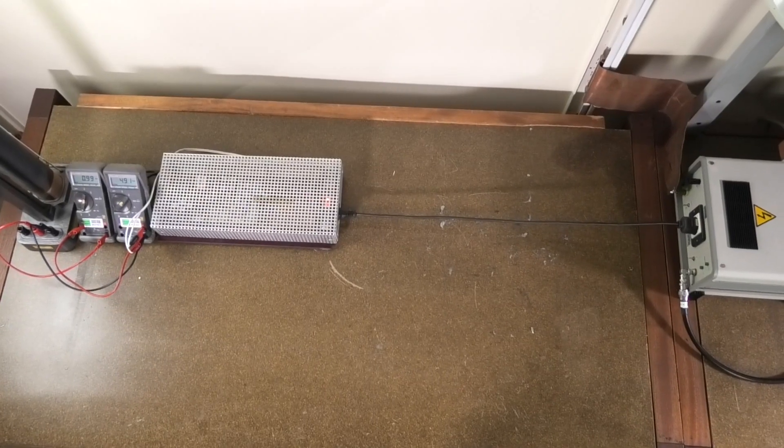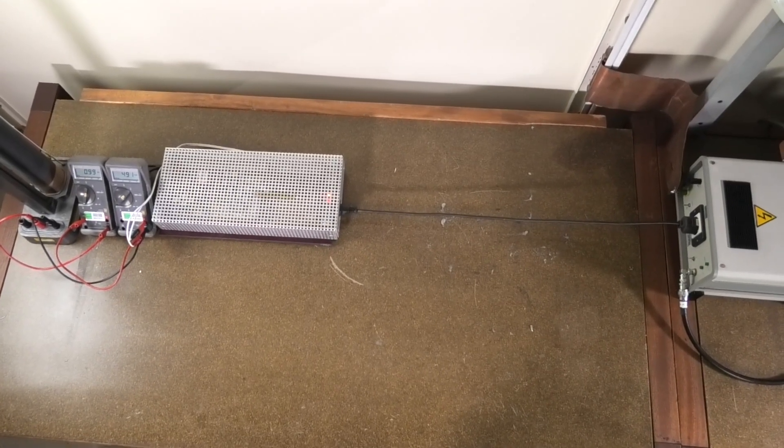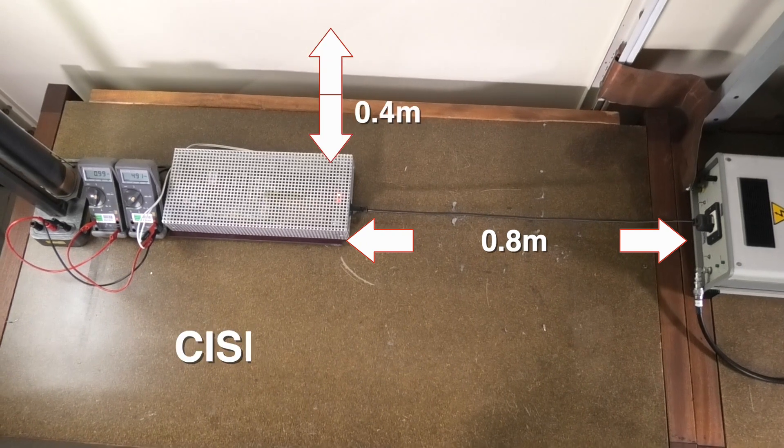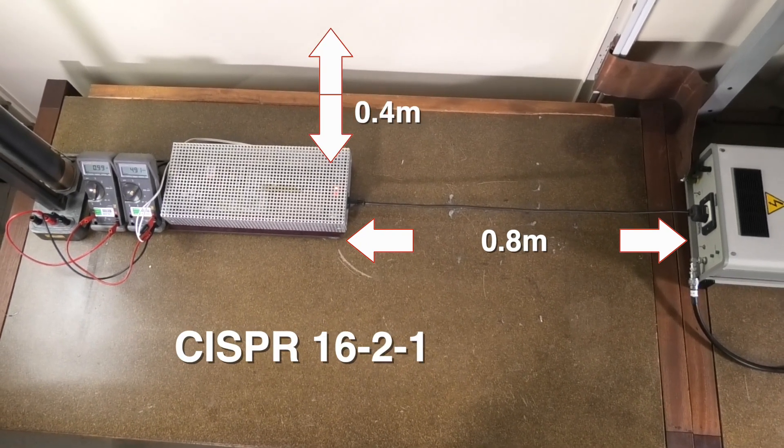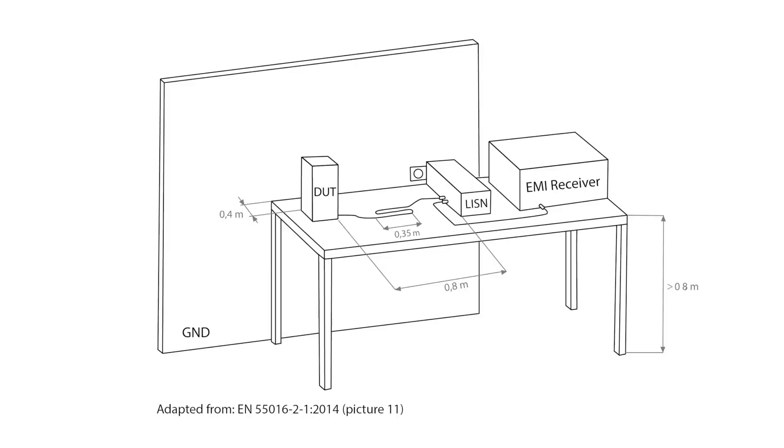By the way, this setup is not built in a random way, but attempts to meet the CISPR 16-2-1 standard as good as possible. This standard already specifies quite precisely how our measurement setup should look. I drew this picture myself, but it is quite similar to the one that you can find in the standard. From left to the right you can see again DUT, LISEN and EMI receiver.